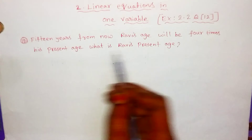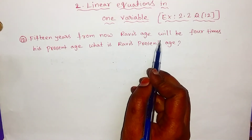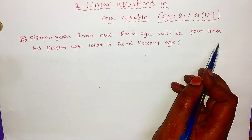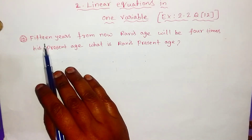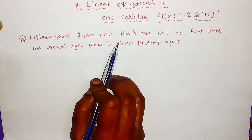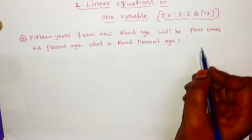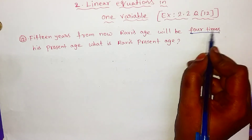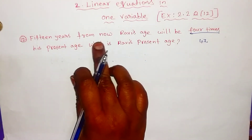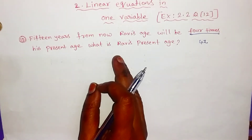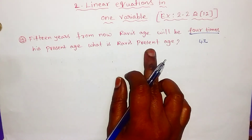The problem: 15 years from now, Ravi's age will be 4 times his present age. What is Ravi's present age?